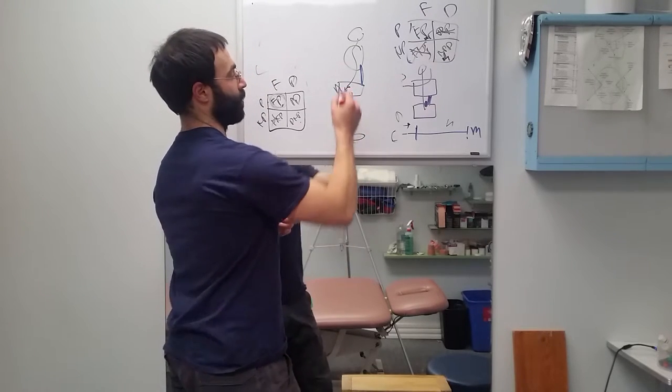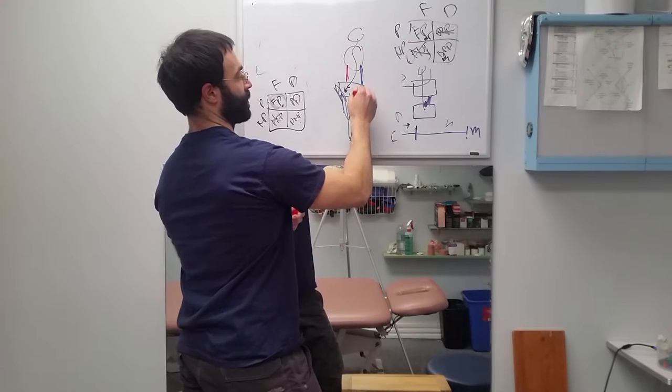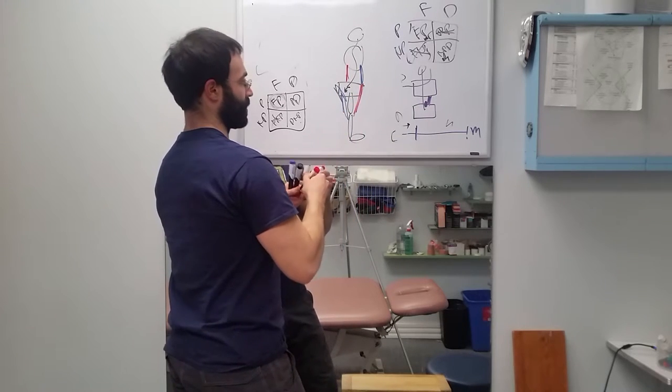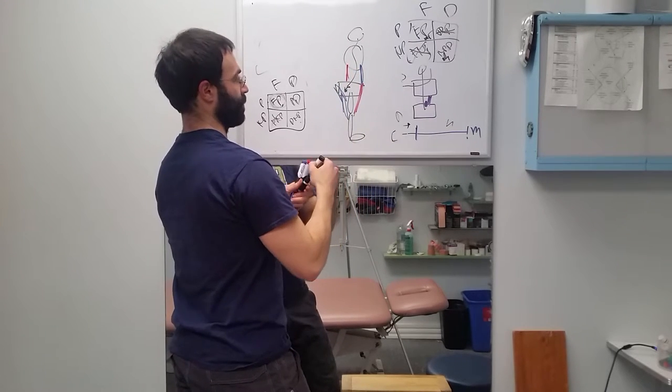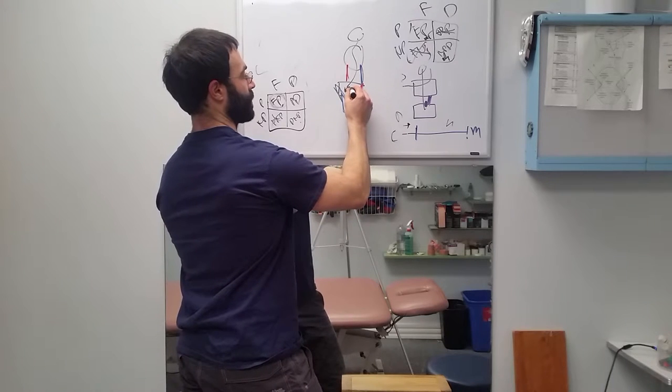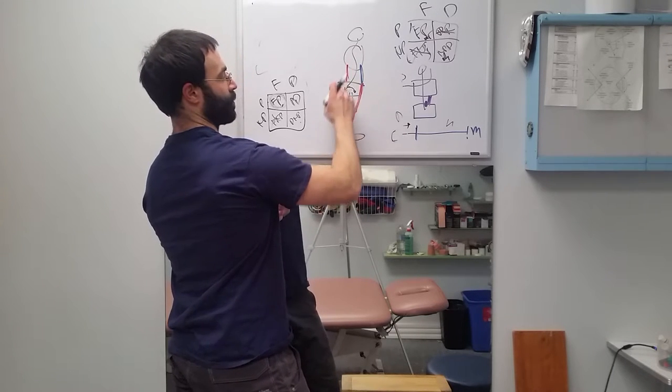On the other side of that, we have our lower back muscles and much of our hip flexor group. So when those guys contract, we'll get an anterior pelvic tilt, which would be the other half.